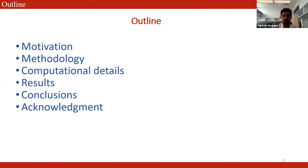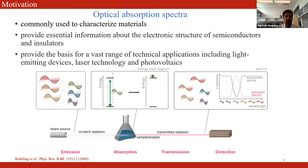Let's begin with the motivation to our work. There is a growing interest in optical absorption spectra in the field of condensed matter physics for various reasons. They can be used to characterize materials. The spectra provide essential information about the electronic structure of semiconductors and insulators. They also provide the basis for a vast range of technical applications, including light-emitting devices, laser technology, and photovoltaics.